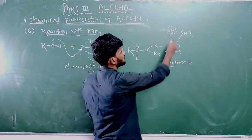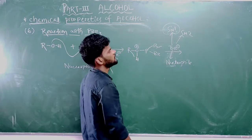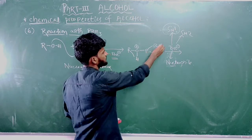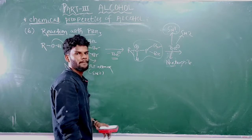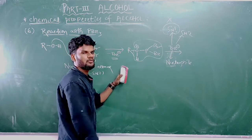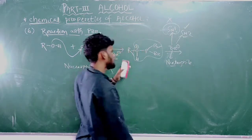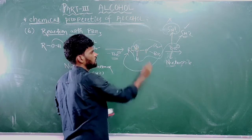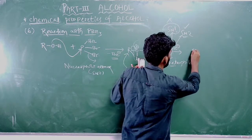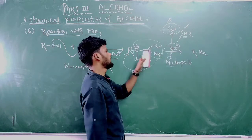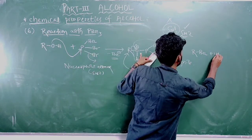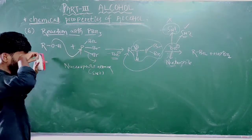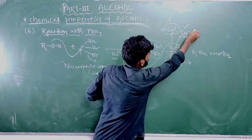In the SN1 pathway, the condition is that the leaving group should be the best leaving group. But the O-P(Br)₂ group is a good leaving group, not the best. So SN1 pathway will not be followed. Therefore, SN2 pathway is followed — in a single step, the nucleophile attacks the electrophile while the leaving group departs, forming R-Br (alkyl bromide) and the leaving group O-H-P(Br)₂.